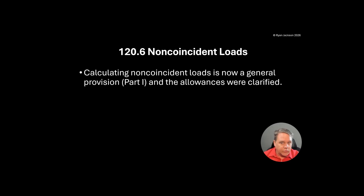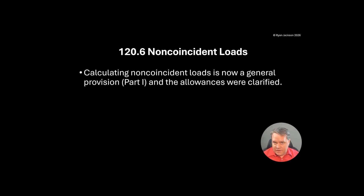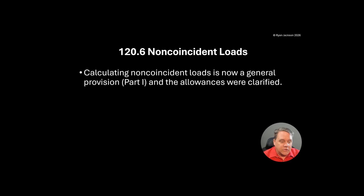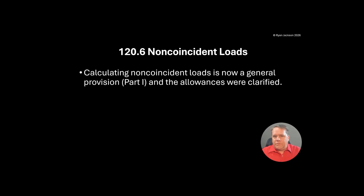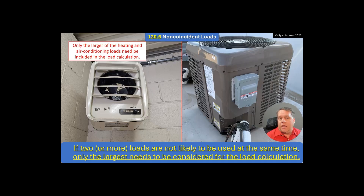Number one, they clarified it, which is great. But number two, by relocating it from 220.60 to 120.6, it no longer applies only to feeders and services. When you go to the 2023 code book and you look up non-coincident loads, it's in 220.60, which is for feeder and service calculations. This concept should apply generally — it's not something that's unique to feeders and services. It's something that could apply to anything. So by relocating it, that in and of itself is a technical change in this instance. A lot of times when you move something, you just changed the numbers. Now this actually means something.